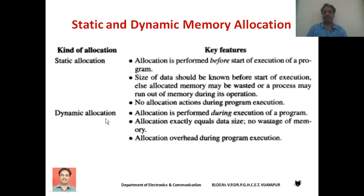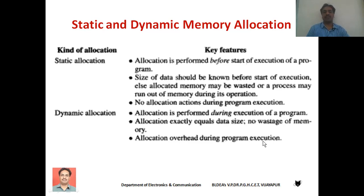Dynamic memory allocation is the memory allocation scheme in which memory is allocated during execution of the program. Memory is allocated to the program only when the program makes a request for memory — that's why it is called dynamic memory allocation. In dynamic memory allocation, the allocation of memory is exactly equal to the size of the program, so there is no wastage of memory space. However, dynamic memory allocation includes some overhead during program execution, as the operating system spends time allocating memory during execution.